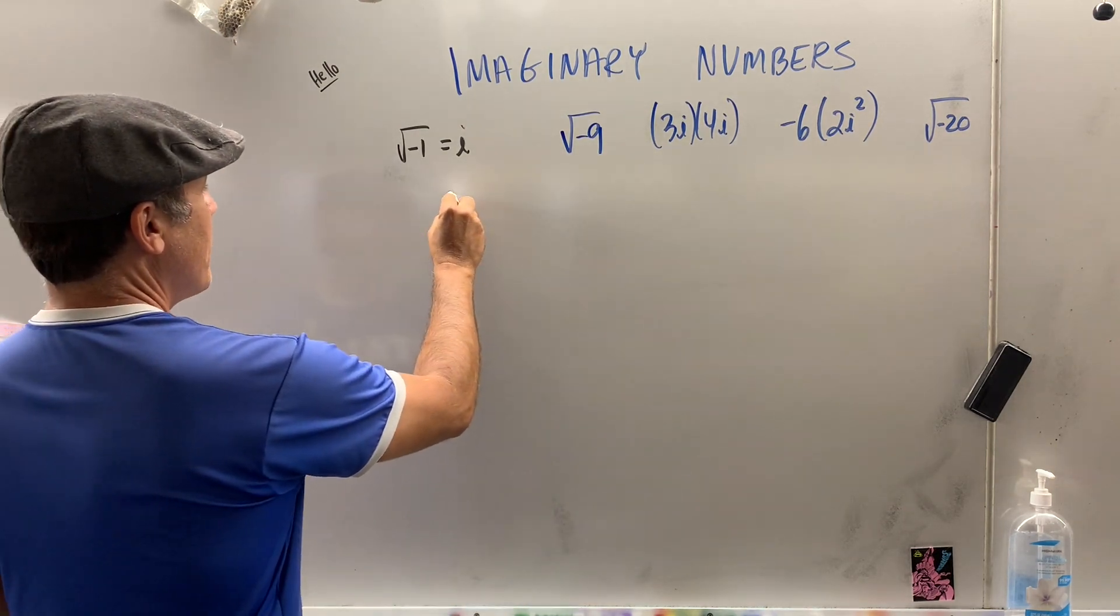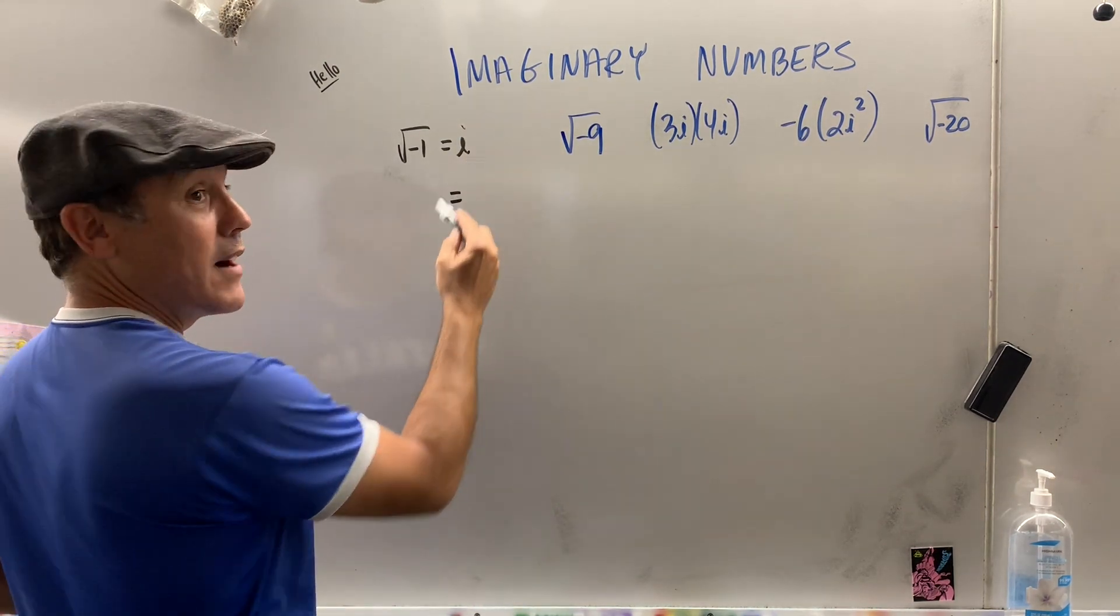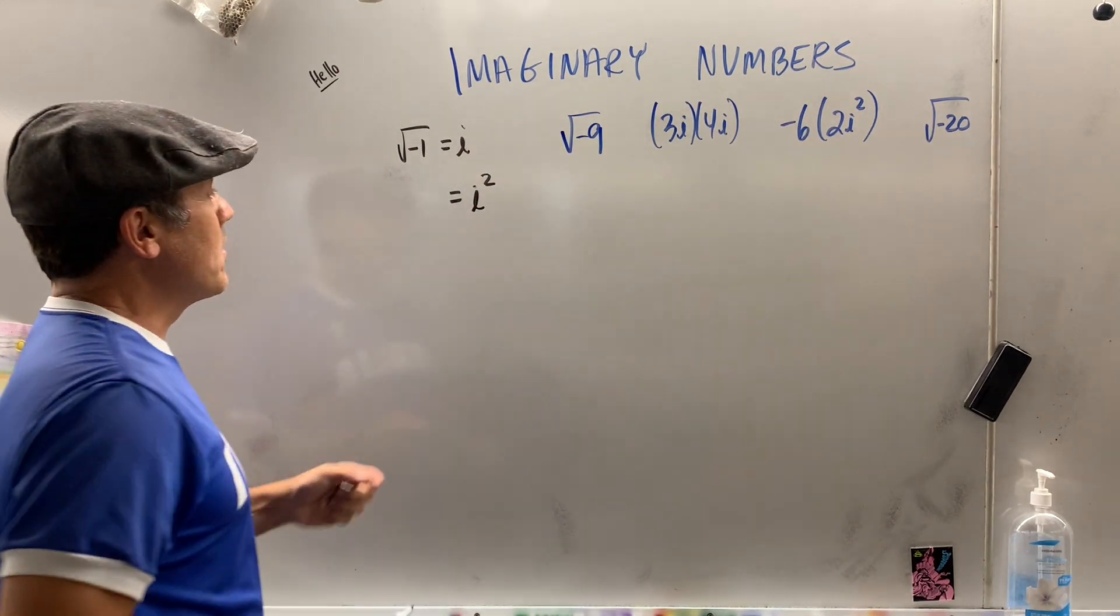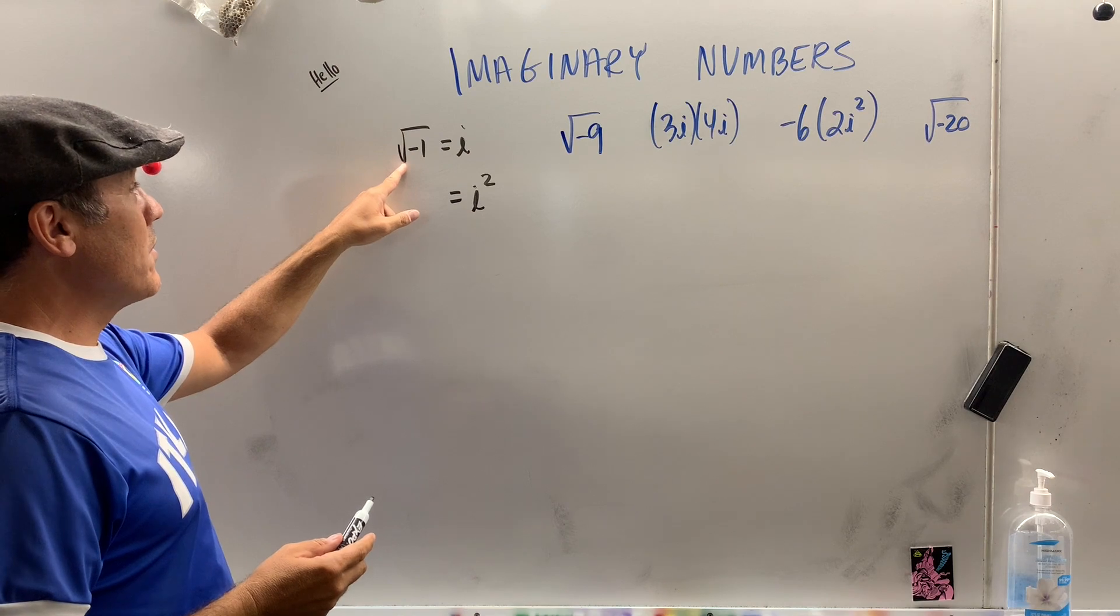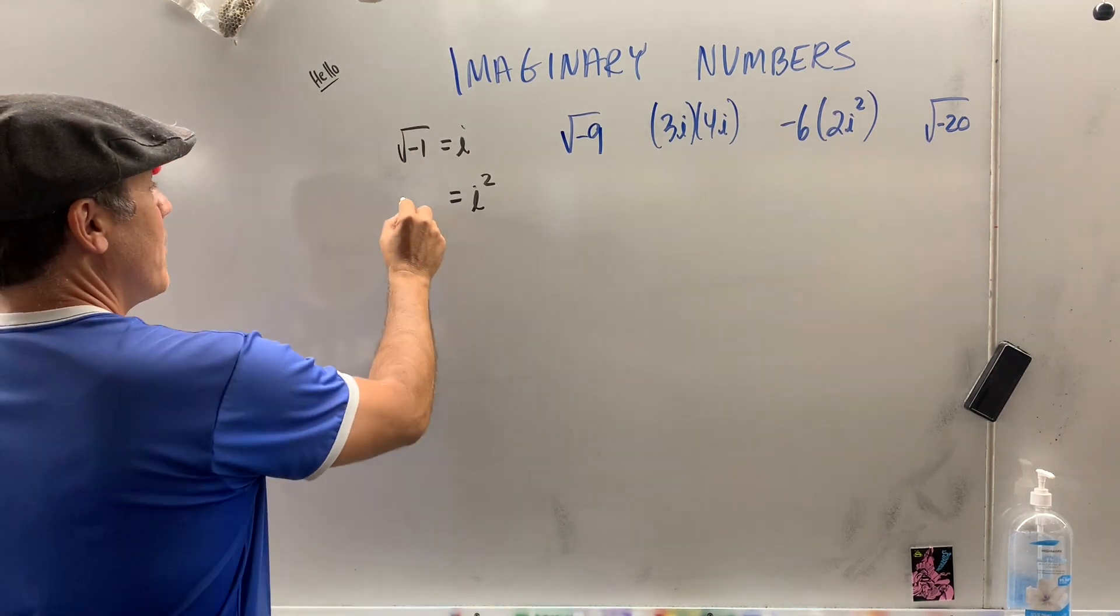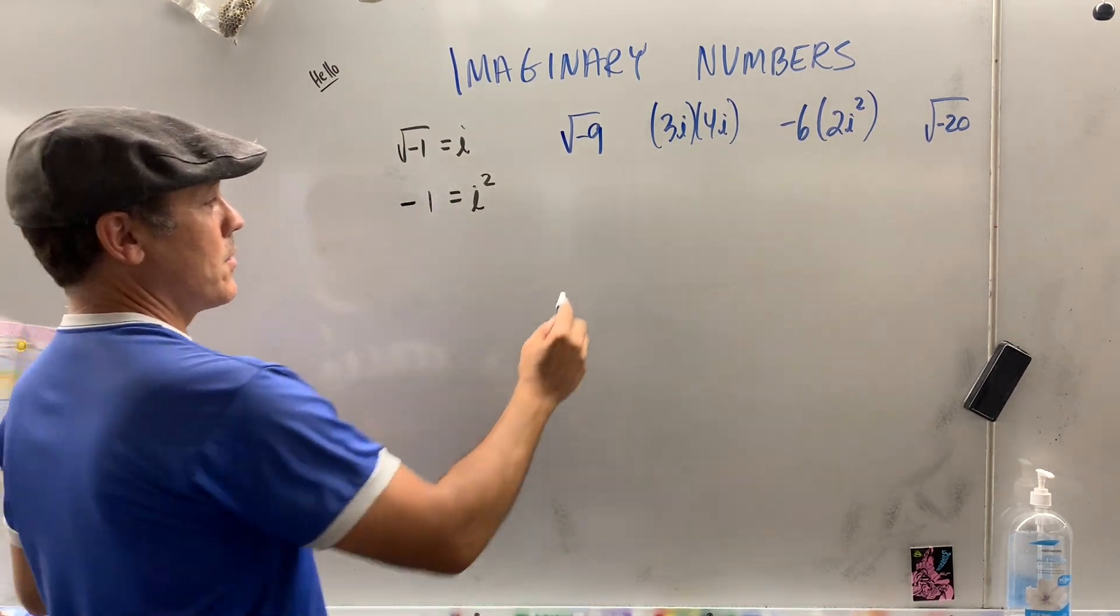Then he said this: what if I take i and i squared? So i times i is i². So that means if I square this, I can just square this. Well, the square root of negative 1 times the square root of negative 1 is negative 1. Now, by the way, I don't know if anybody ever told you this.